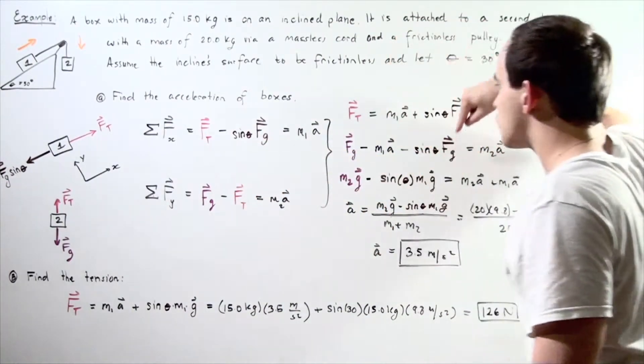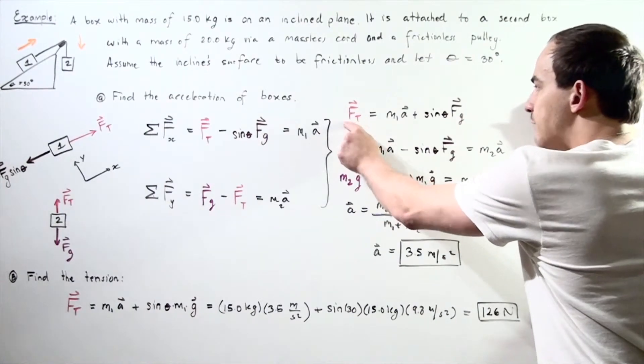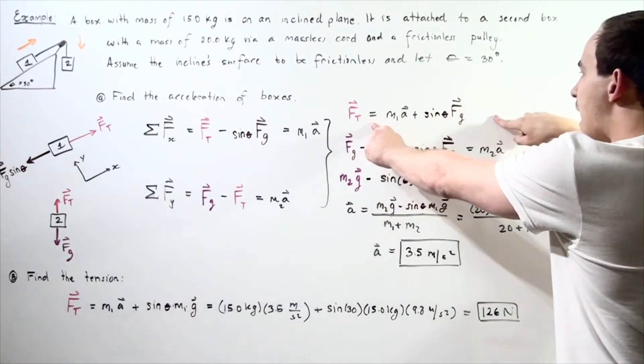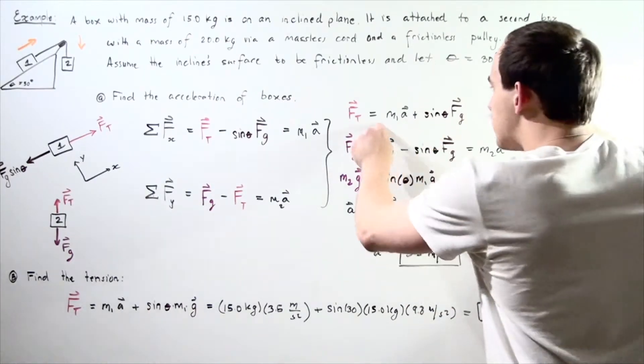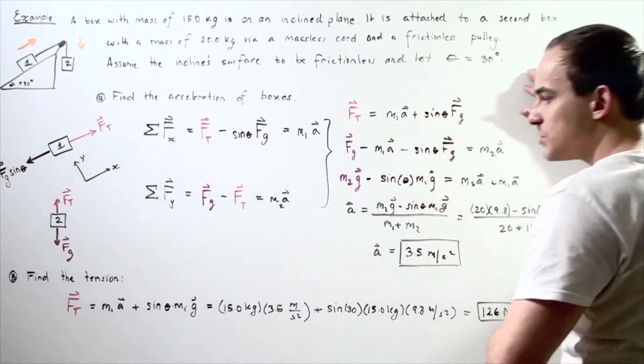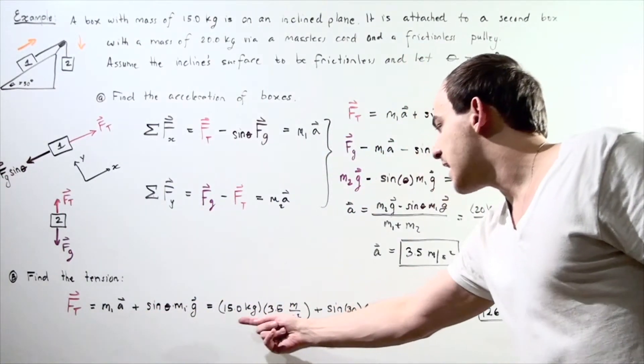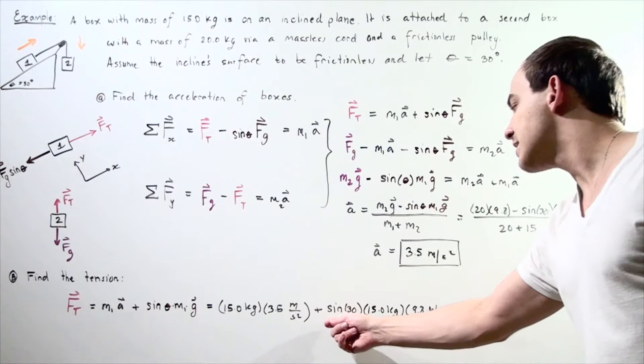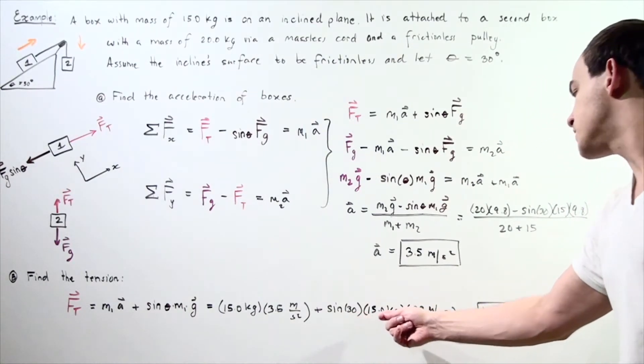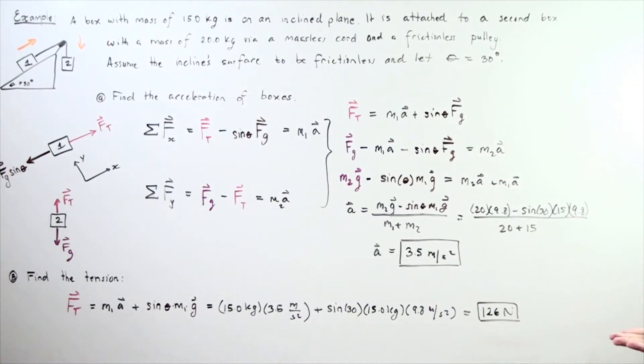Let's take this and let's rewrite it as we did here. The tension in our rope Ft is equal to these values. Now we know what A is. So let's use this formula. Plug in M1A and these nodes as we did here and we get 15 times 3.5 plus sine of 30 multiplied by 15 multiplied by 9.8. We add these values up and we get a force of 126 newtons.